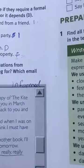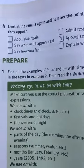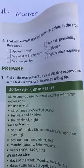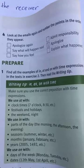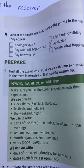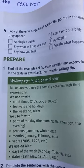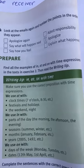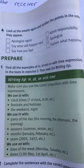Number four: look at the emails again and number the points in the order they appear. Let's read the points: apologize again, say what will happen next, say how you feel, admit responsibility, apologize, and explain what happened.